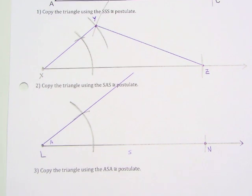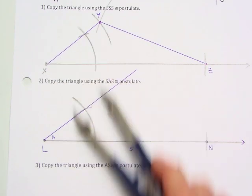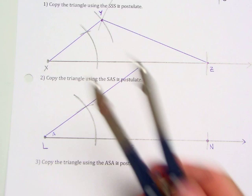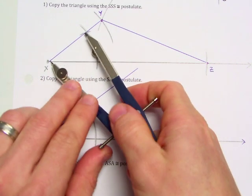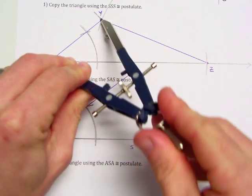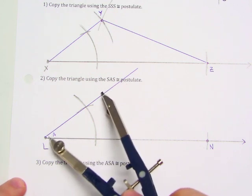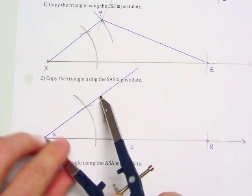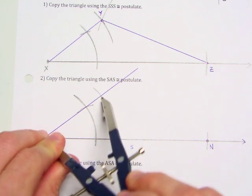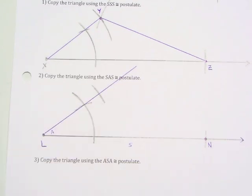The last thing to get here is our side. So we're going to copy side XY and put it right down here. So there's XY again, and we know that that will be the same length.